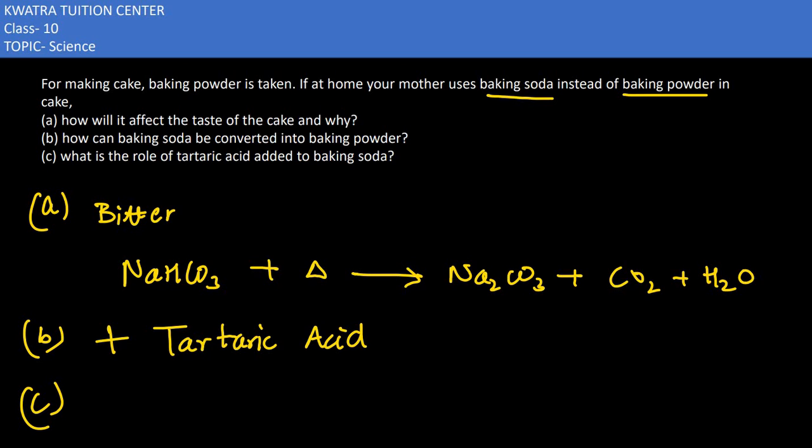In part B, we have asked what is the role of tartaric acid added to baking soda. It is dissolved in water because it gives out hydrogen ions and makes cakes fluffy. That's the role of tartaric acid. You can first write it gives out H+ ions.